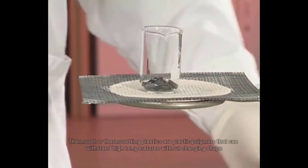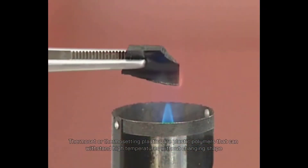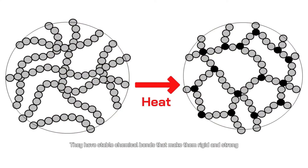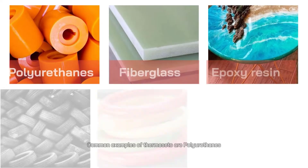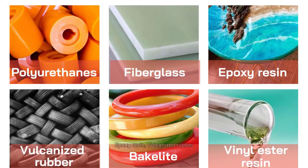Thermoset or thermosetting plastics are plastic polymers that can withstand high temperatures without changing shape. They have stable chemical bonds that make them rigid and strong, preventing them from melting when heated. Common examples of thermosets are polyurethanes, fiberglass, epoxy resin, vulcanized rubber, Bakelite, and vinyl ester resin.